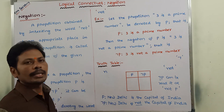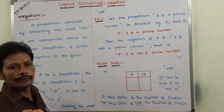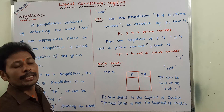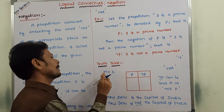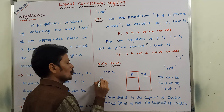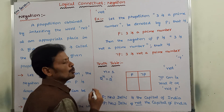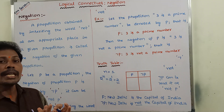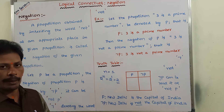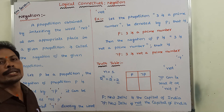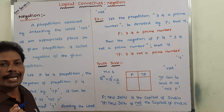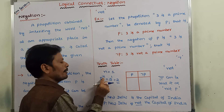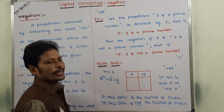Here, n is the number of propositions used in the negation connective, which is one. The number of rows in the truth table is 2^n, that is 2^1, because n equals one. So we get two rows in the truth table. In the case of the negation connective, n equals one, giving us two rows.